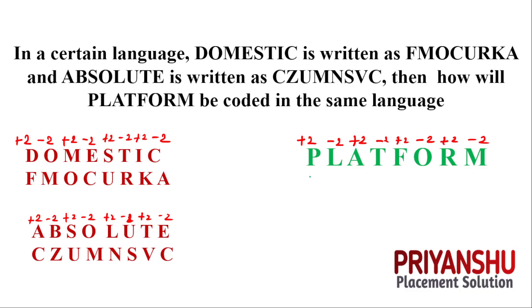Solving for 'platform': P plus 2 = R; L minus 2 = J; A plus 2 = C; T minus 2 = R; F plus 2 = H; O minus 2 = M; R plus 2 = T; M minus 2 = K. So the correct answer is R J C R H M T K. I hope that is clear. Let us move to the next question.